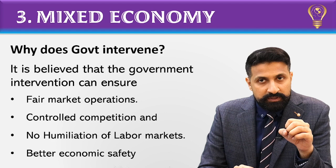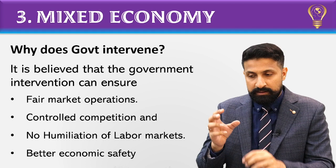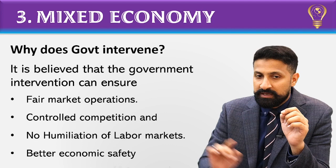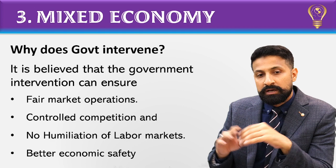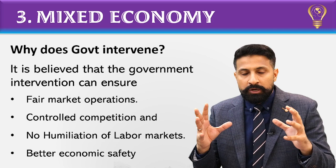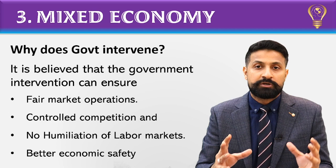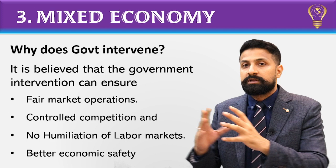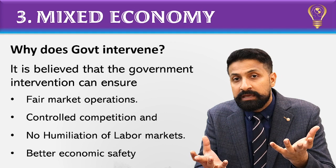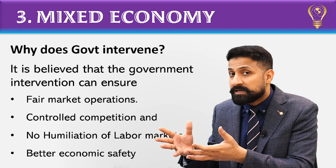So the government says: we will not take all matters fully into our hands, but we will definitely keep watch — we will do strict monitoring and set rules, regulations, and policies. The first thing is to ensure fair market operation, which is why government intervenes. Second is to control competition — no humiliation of the labor market. For example, two giant firms operating in the market, in the competition race, sometimes reach a level we call 'price destroyer' in market studies — a price destroyer condition arises.